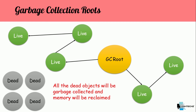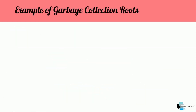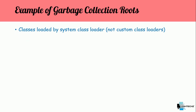Since GC roots are the initial point, there are several examples of what can act as a GC root. The first is classes loaded by the system class loader. Note that custom class loaders are not part of garbage collection roots.